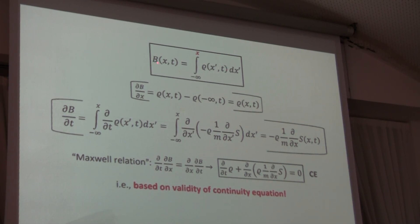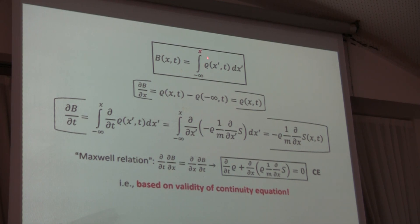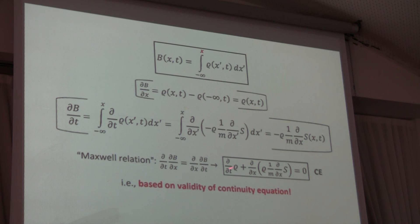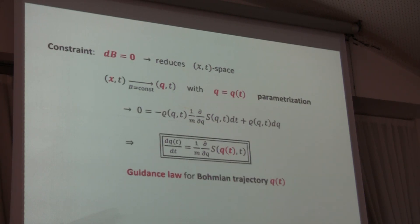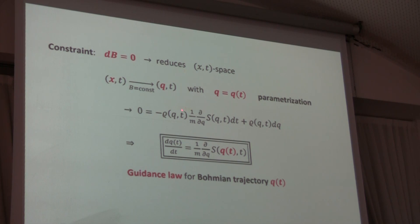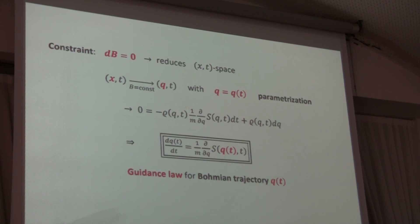The definition shows that this function b of x and t is just the amount of probability you get when you integrate from minus infinity to a specific border x over the probability density. With this definition, you can show that the partial derivatives fulfill the requirement that the continuity equation is valid. We can now impose the constraint that b is constant, reduce our total differential, cancel rho on both sides, and what we end up with is our equation of motion for Bohmian trajectories — but now it is not postulated, it is derived under the assumption that b is constant, meaning the amount of probability between minus infinity and the integration border is a constant quantity.